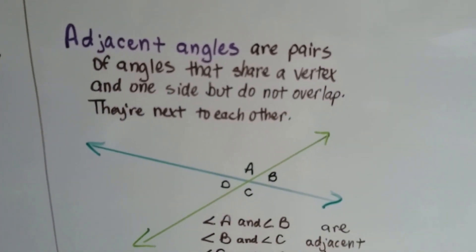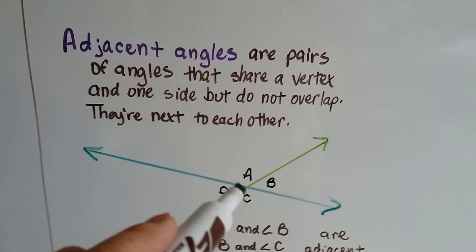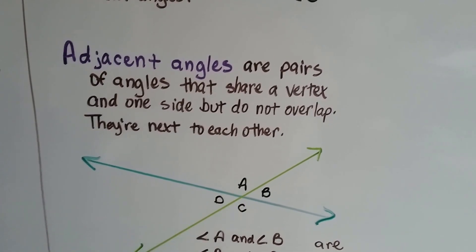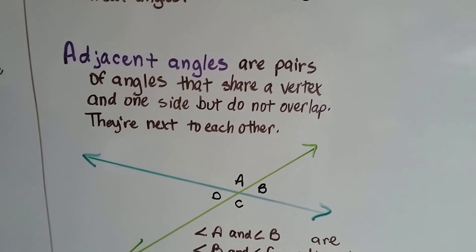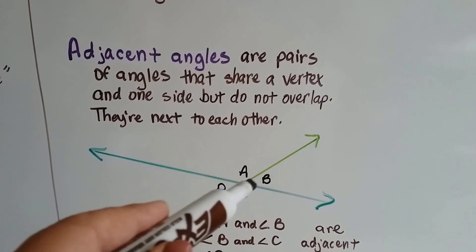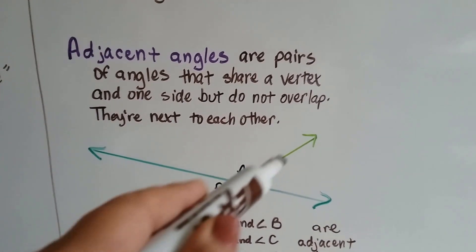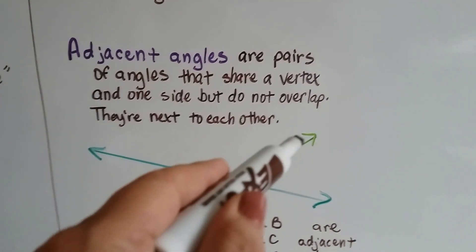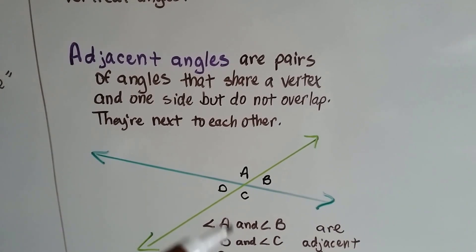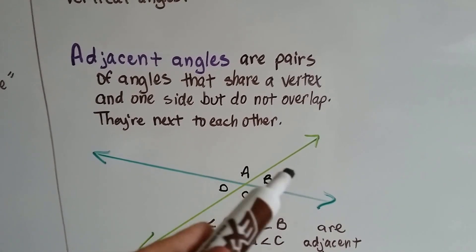Adjacent angles are pairs of angles that share a vertex. Remember, the vertex is the very, very sharp corner inside of the angle. And they share this vertex and one side. So, A and B are sharing this vertex, and they share this side right here, this green line in between them. And they don't overlap, and they're next to each other. So, these are adjacent angles.